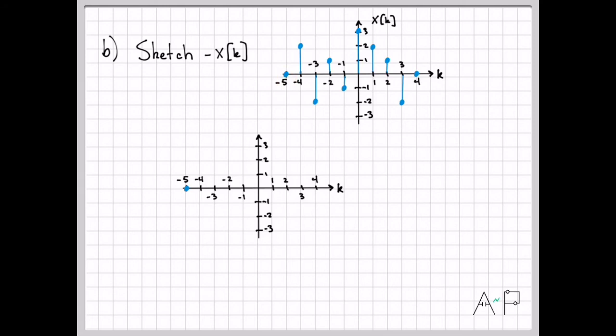So previously 0, the negative 0 is still just 0. So nothing much of interest happens there. Originally, I had a value of 2 at time minus 4. If I negate that, I get minus 2 at time minus 4. At time minus 3, initially I had a value of minus 2. If I negate that, I get a value of 2.